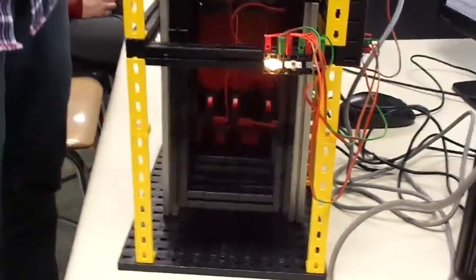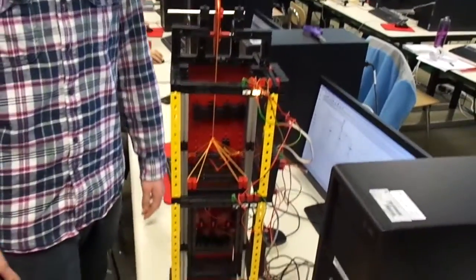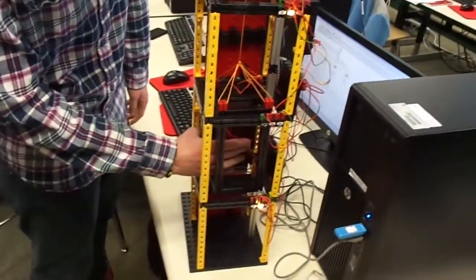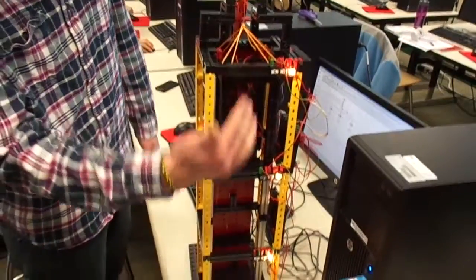So we'll hit the second floor button and the elevator will go up with ease. It goes to that floor. Then we can hit the third floor button and the elevator will be lifted. The lights go on accordingly.